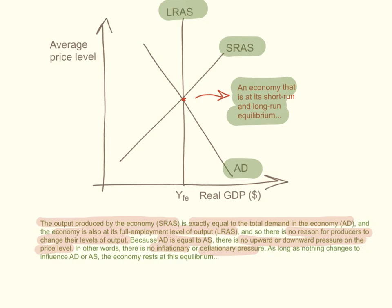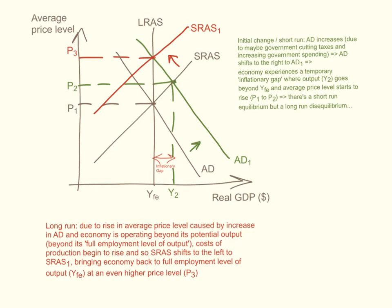As long as nothing changes to influence aggregate demand and supply, the economy rests at this equilibrium. More often than not though, the economy is not at this equilibrium. Let's have a look at what that entails. We'll assume the economy began at equilibrium — the intersection of the three curves — and there has been an initial change where in the short-run aggregate demand has increased, perhaps due to the government cutting taxes or increasing government spending. The aggregate demand curve shifts to the right, from AD to AD1.